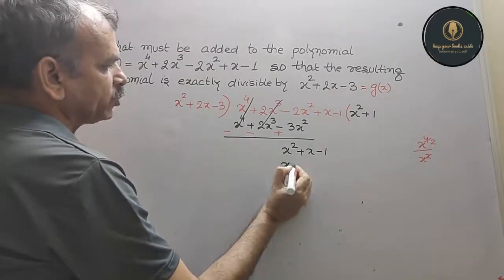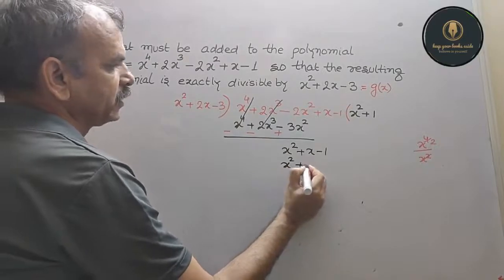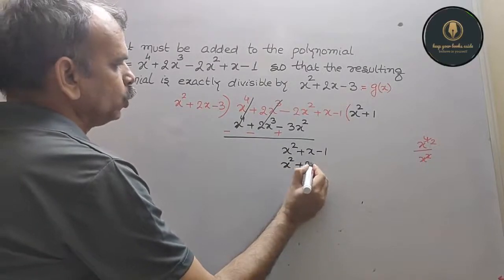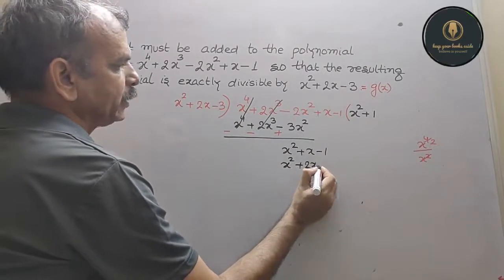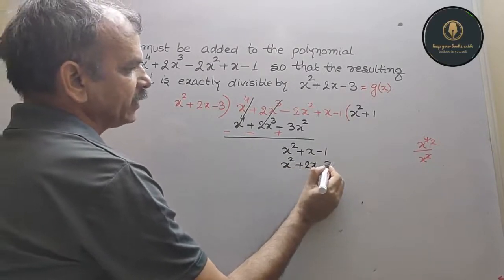The next term in the quotient: x² divided by x² gives +1. So x² times (x² + 2x - 3) gives x² + 2x - 3.